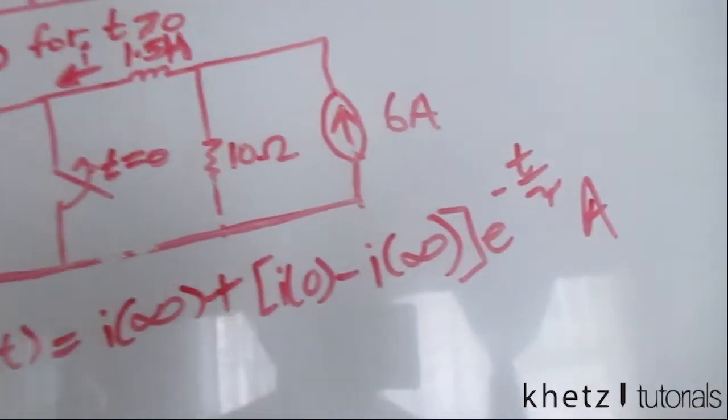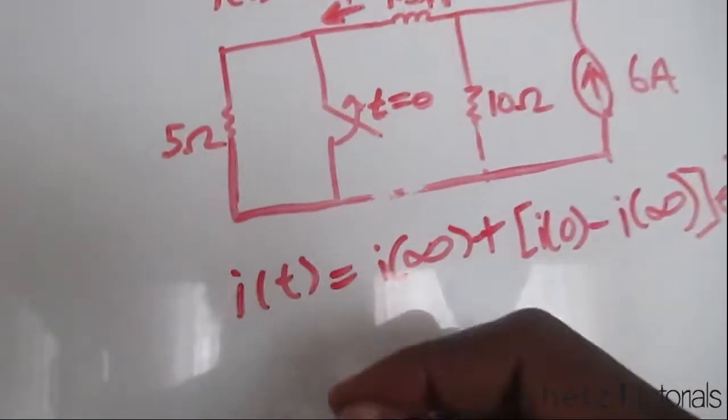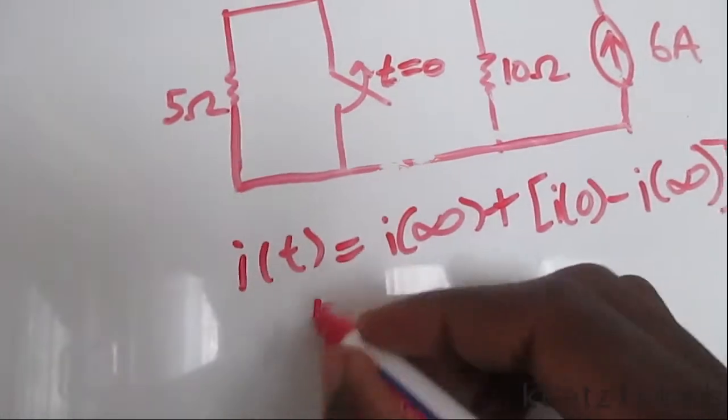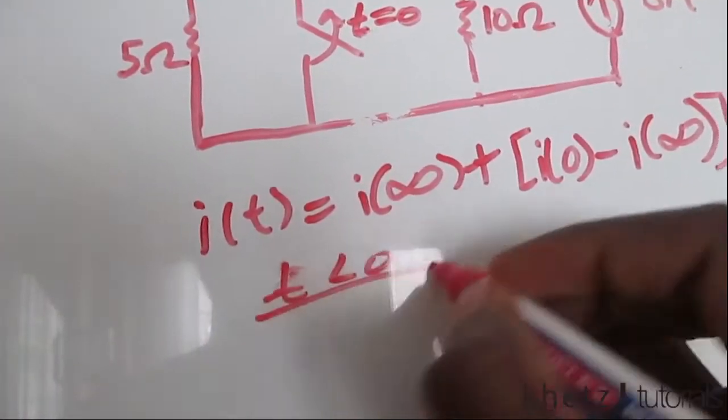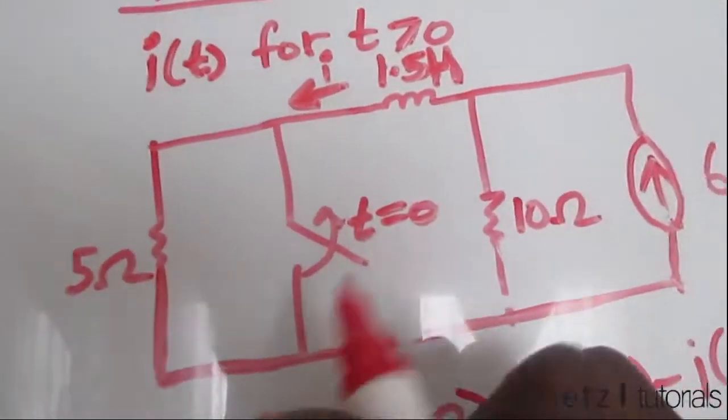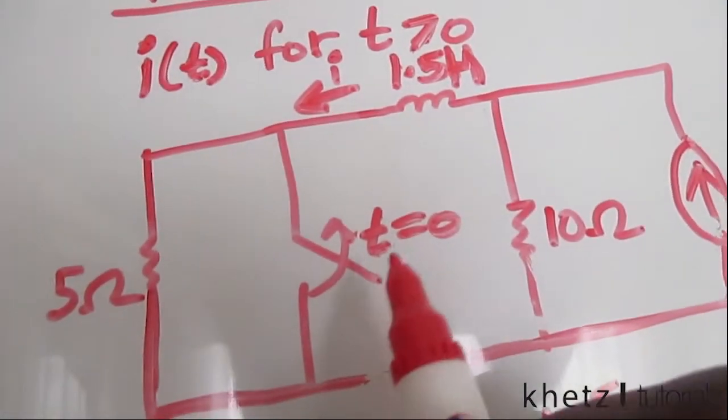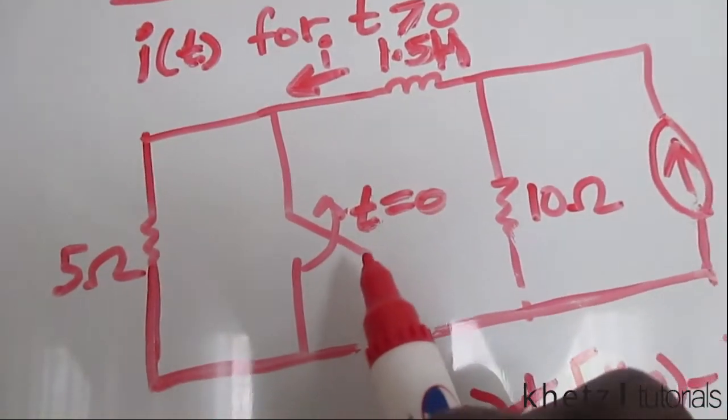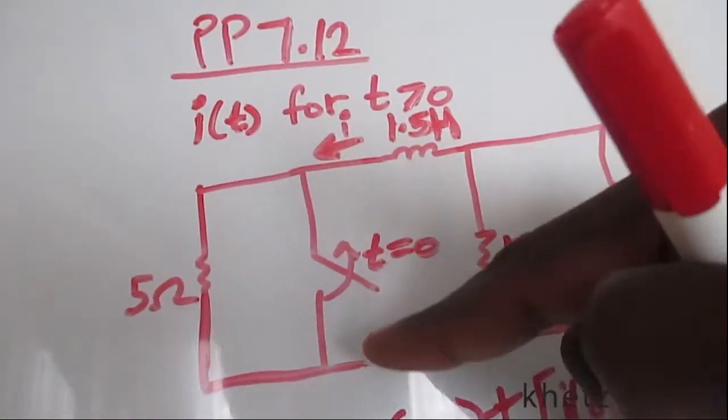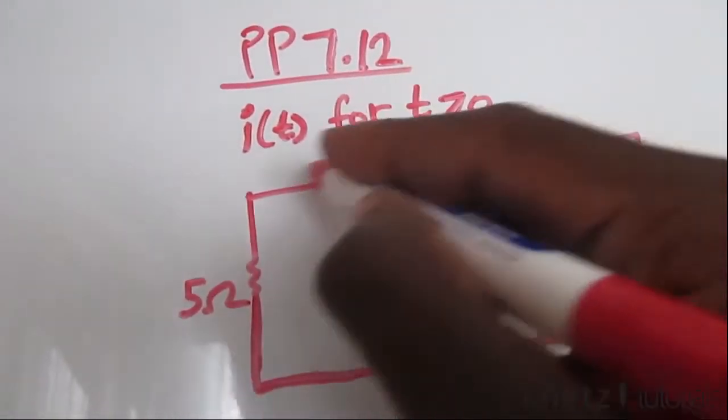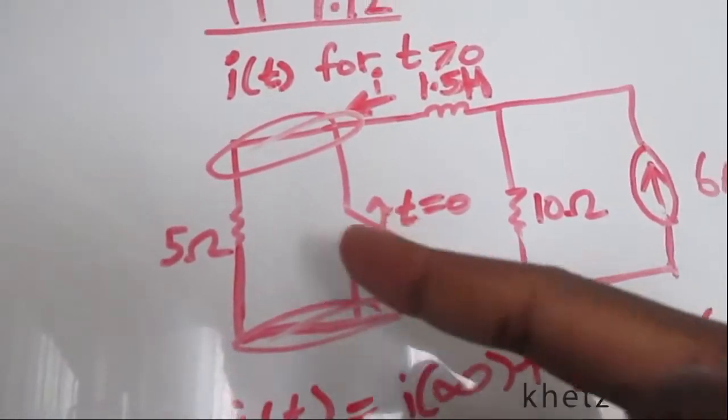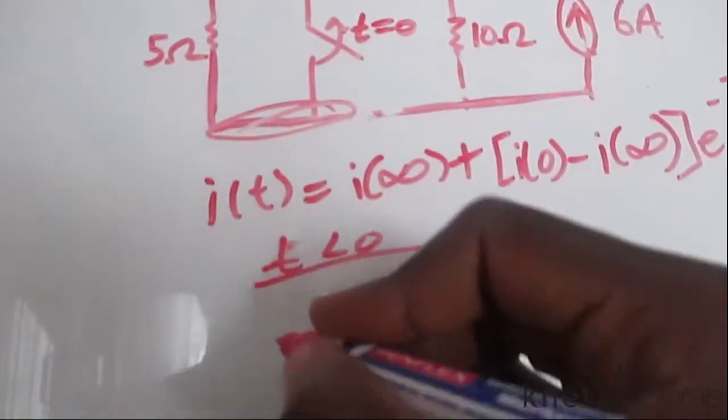Now let's go to time less than zero. If you look here, this switch was closed for a long time and it was opened at time equal to zero. Now it was closed, so we have a short circuit. A short circuit in parallel with the resistor value is going to result in a short circuit.